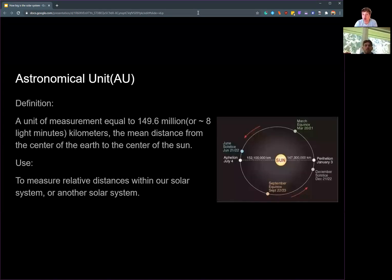The first unit of measure we're going to be talking about is the astronomical unit, or the AU. Essentially, it's a unit of measurement equal to 149.6 million, or approximately eight light minutes, kilometers. It's the mean distance from the center of the Earth to the center of the Sun, so it's essentially the average distance of Earth's orbit.